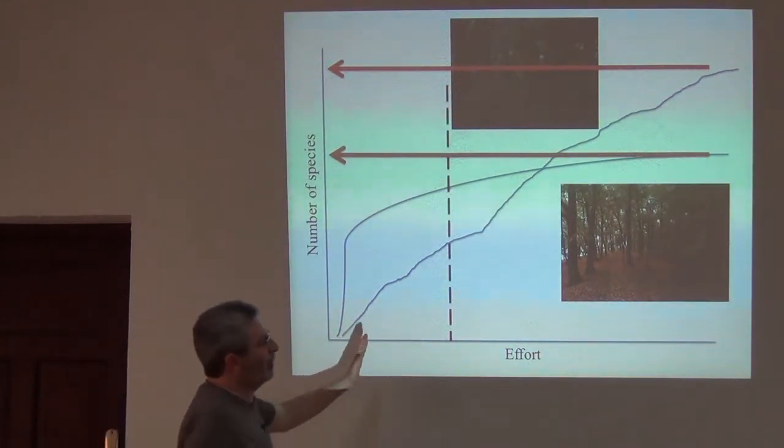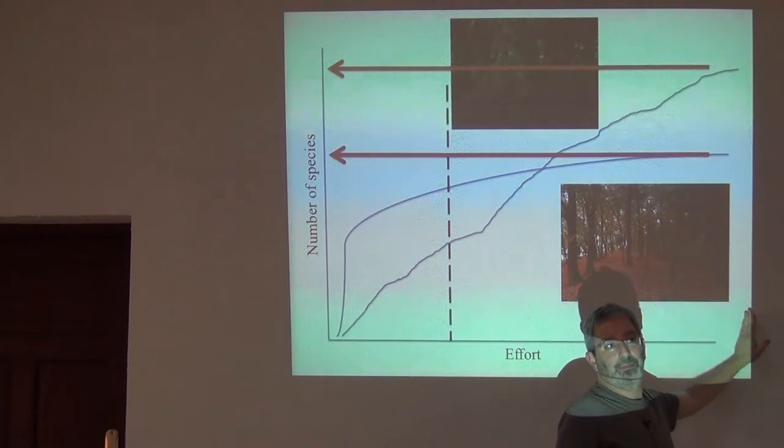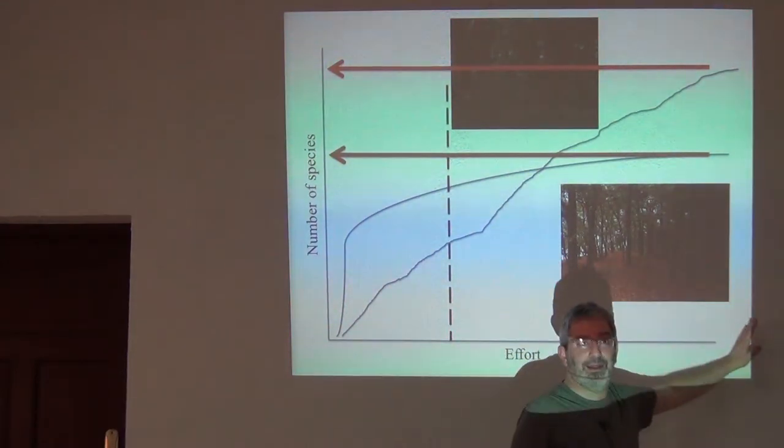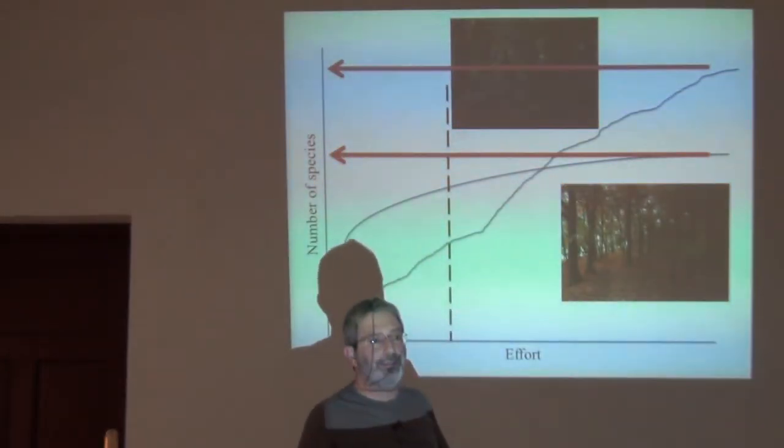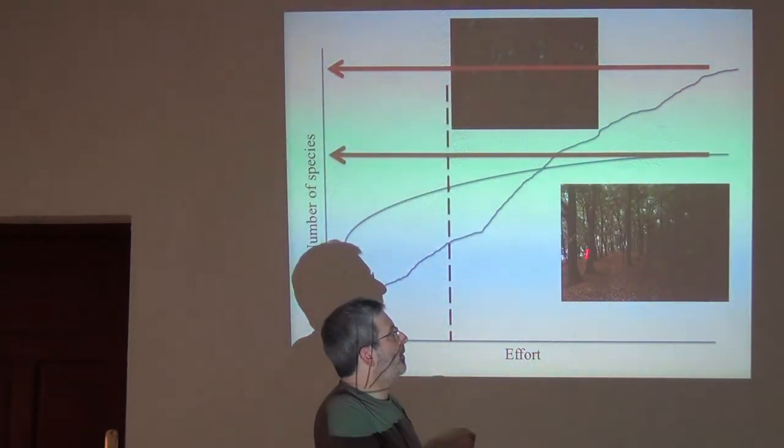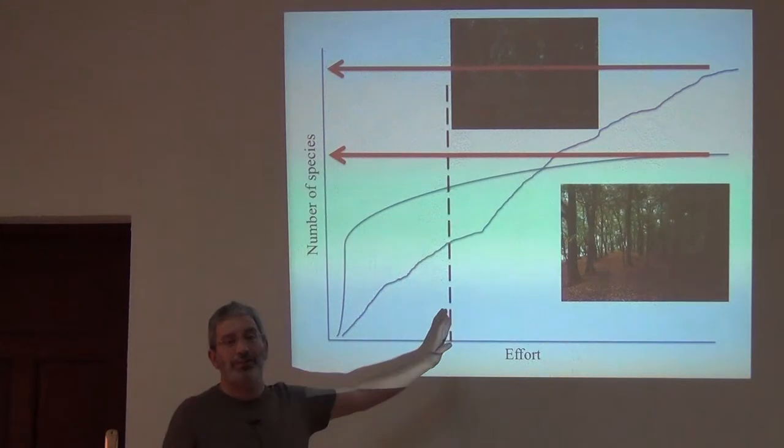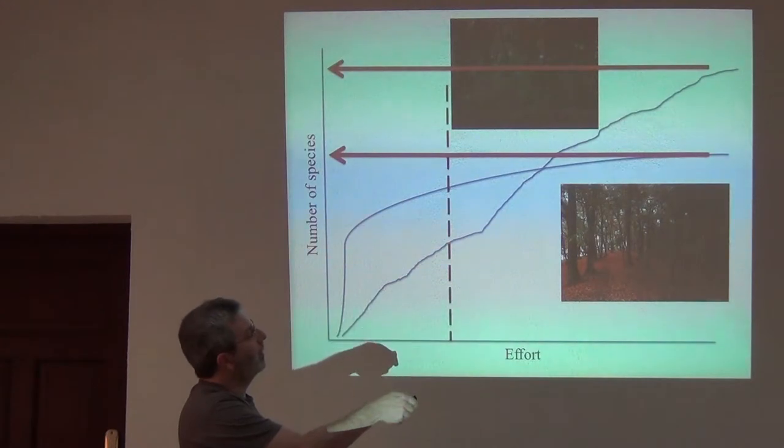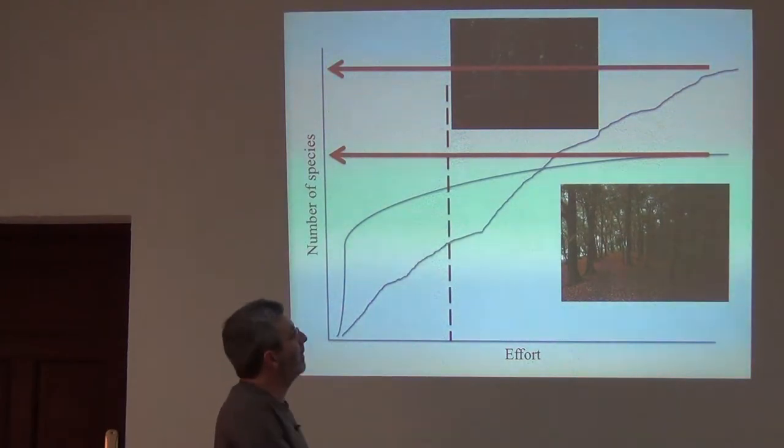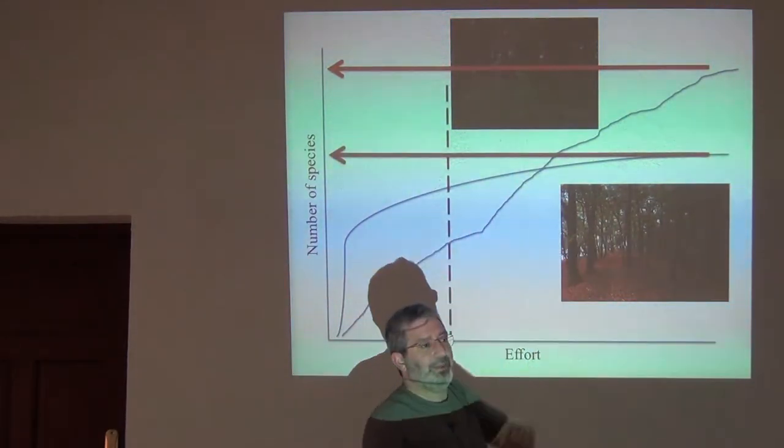Now the other effort-based cutoff that we could do is this one. So instead of staying five days, we stay 30 days. And in that case, this inventory is probably done. But what have we done here in this site? We were almost done at five days and we stayed 25 more. We've wasted our time. In all that time, maybe we accumulated a couple more species. But by staying this amount of effort this long, we wasted all of that time. And probably better would have been to take those 20 days and invest them in the other site.